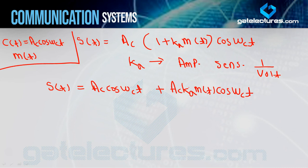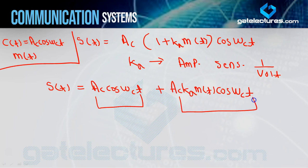The basic aim of modulation is to send the message signal from transmitter to receiver. The main signal is the message. The carrier, as the name suggests, carries your message signal from transmitter to receiver. The first term is only the carrier part — that is the wastage, the unwanted signal. The second part is the wanted part.